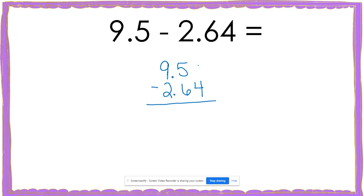Now, when I do this, I notice that there's nothing to take the four away from. So I need to put a zero as a placeholder. That zero does not change the value of 9.5. Now I can subtract like normal.